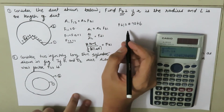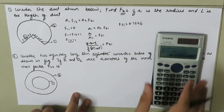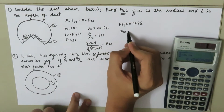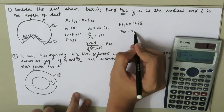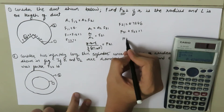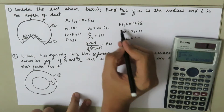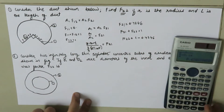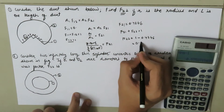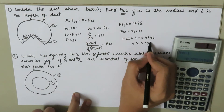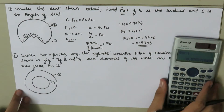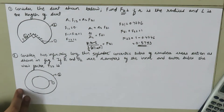Now applying the summation rule: F₂₁ + F₂₂ = 1. So F₂₂ = 1 − F₂₁ = 1 − 0.4247 ≈ 0.5753.